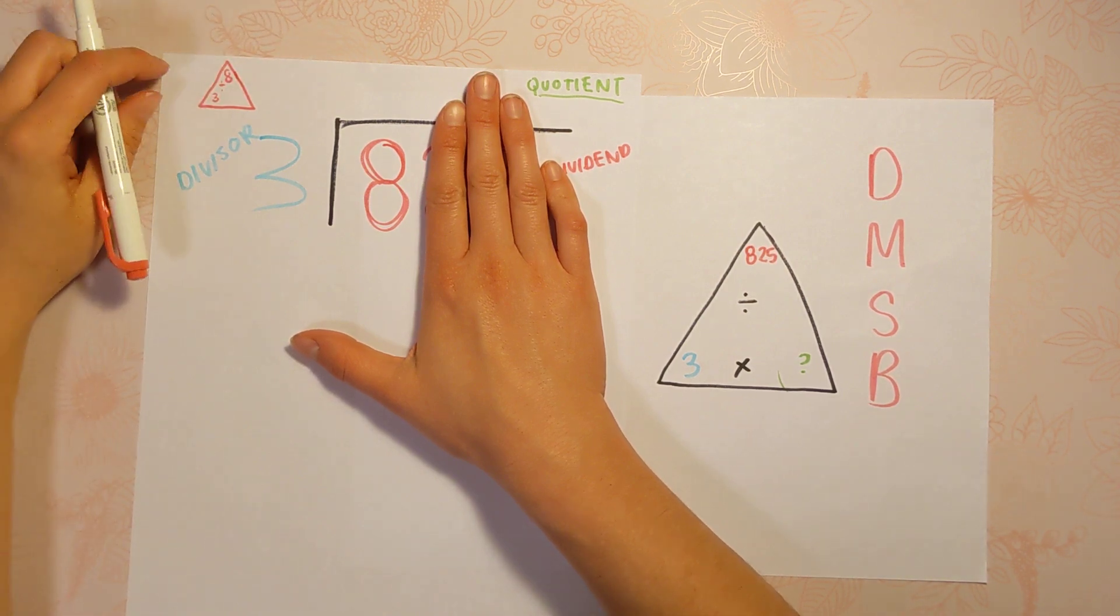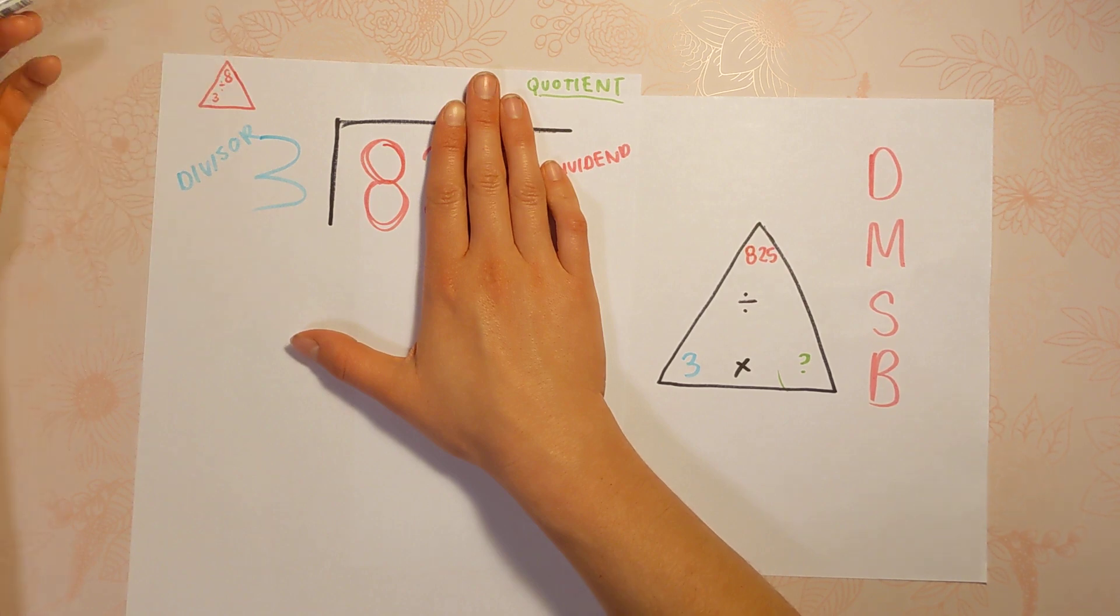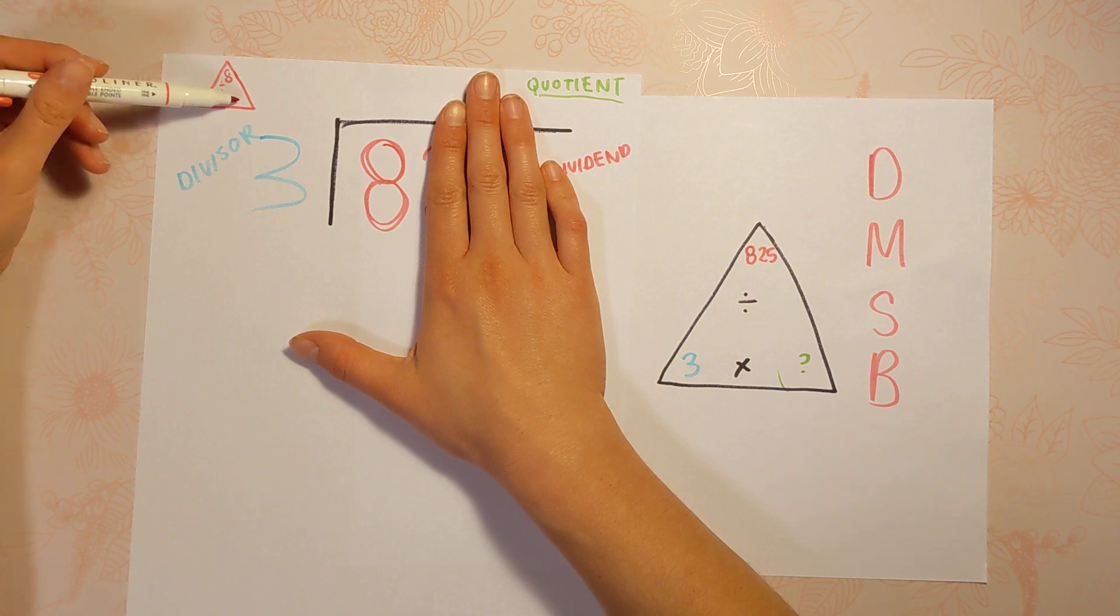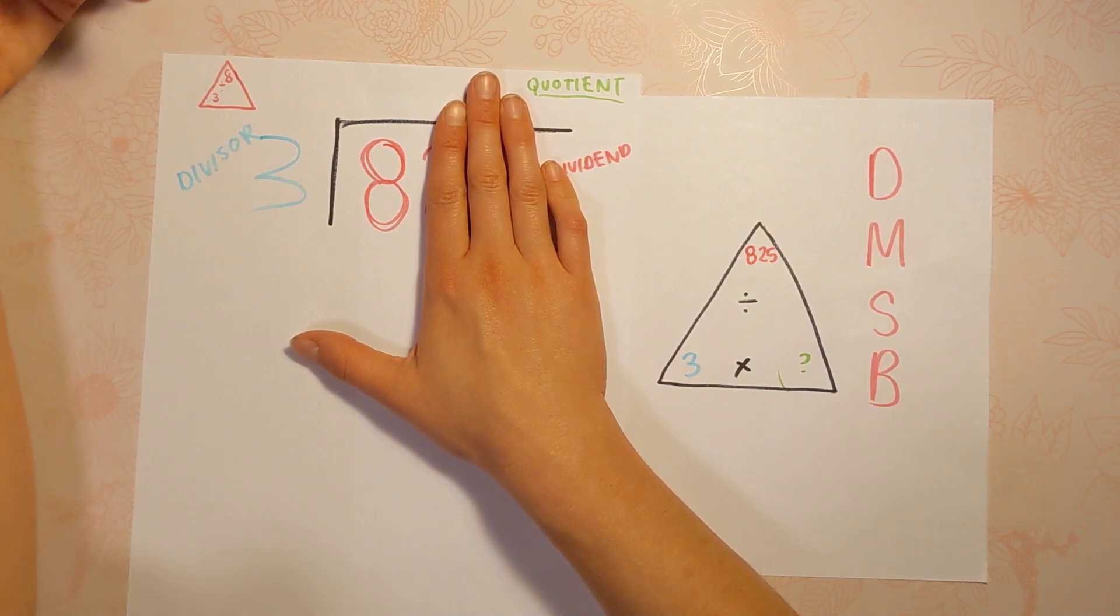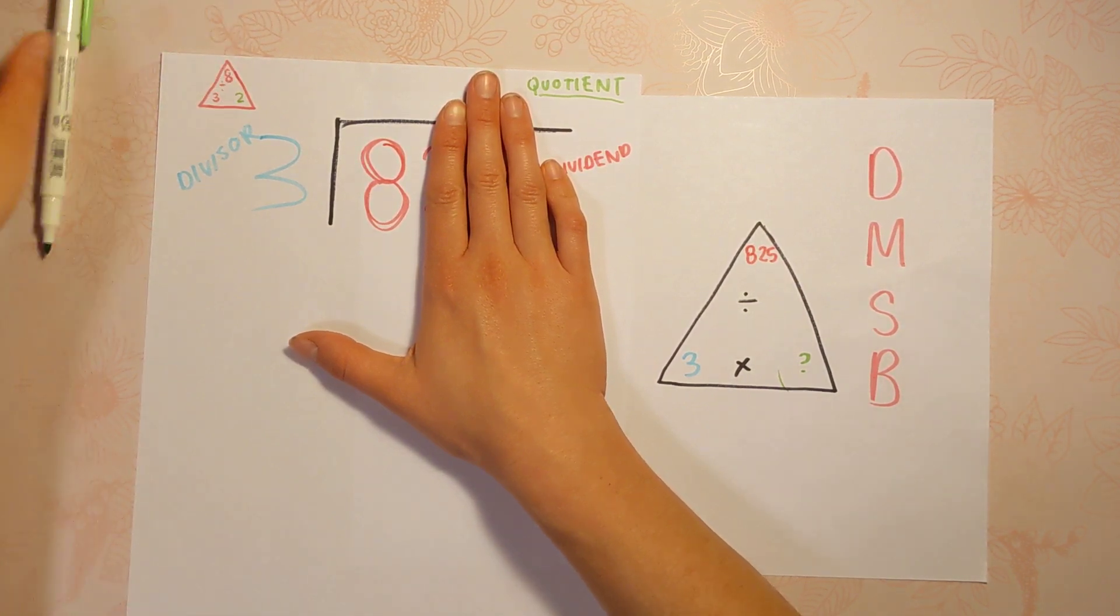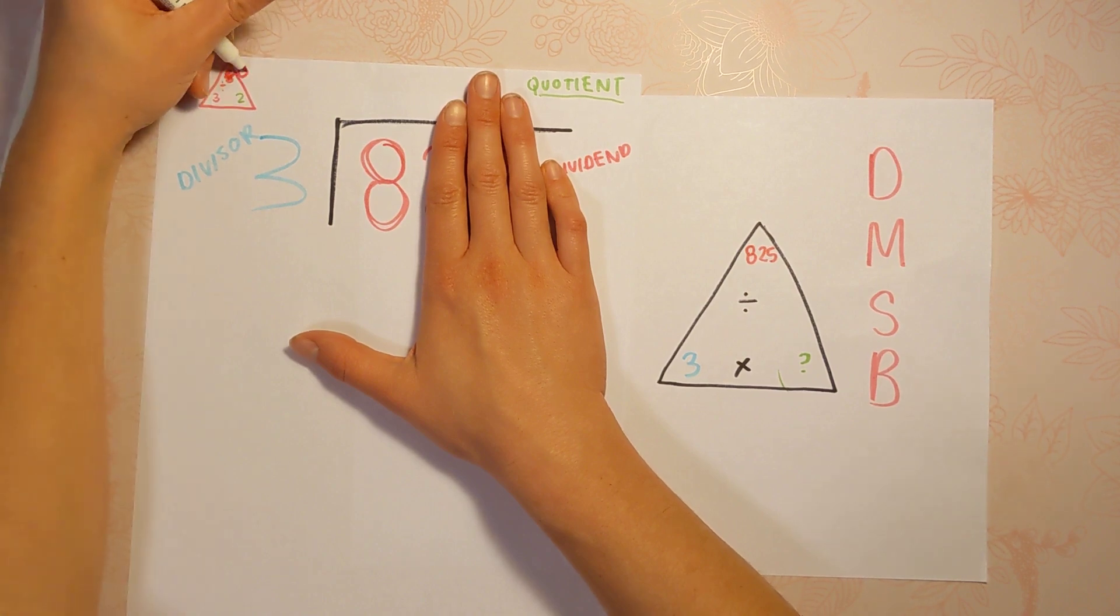Well, if you know your facts, you know that you can't do 8 divided by 3. It doesn't work. But could you get close to 8? Could you do 3 times something gets you close to 8? What's the closest you could get? 3 times 1 is 3, 3 times 2 is 6, 3 times 3 is 9. That's too far.